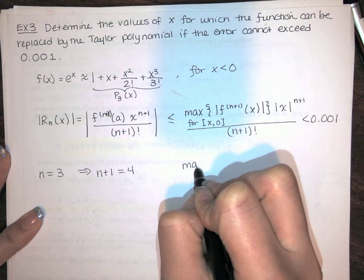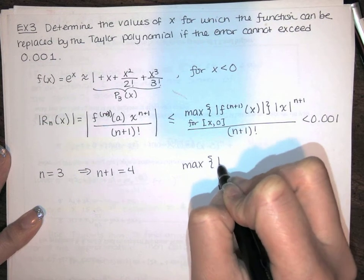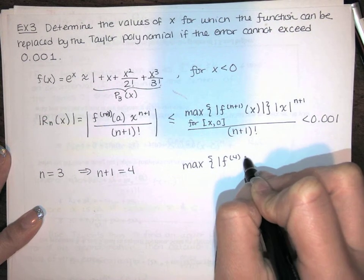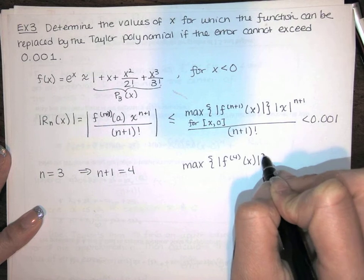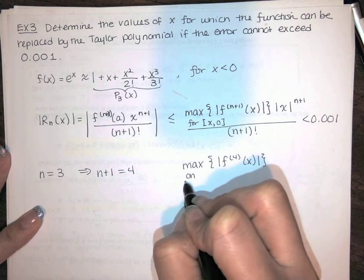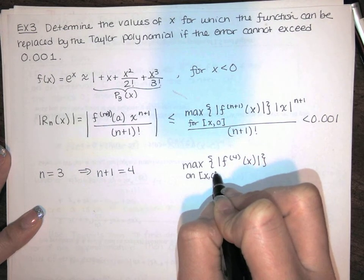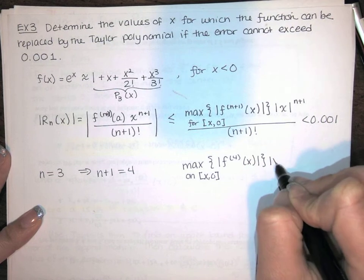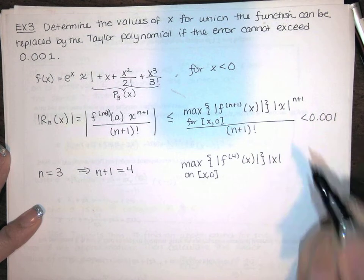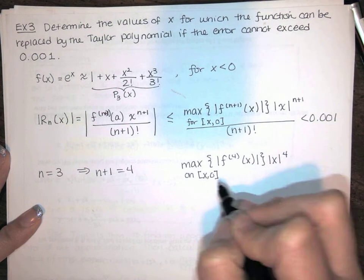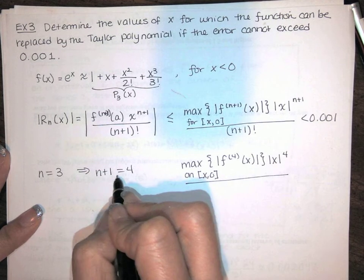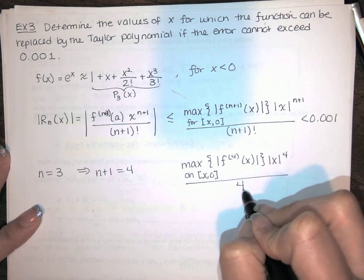And so what we need is the maximum value of the fourth derivative of our function on the interval from x to 0 times the absolute value of x to the n plus 1. So that's x to the fourth over n plus 1 factorial. So that's 4 factorial.